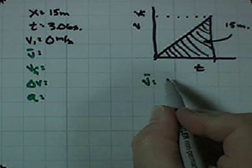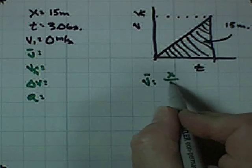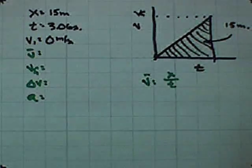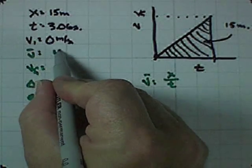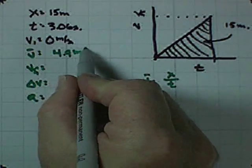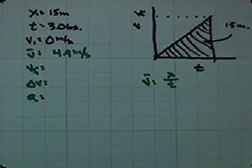Well, average velocity is easy. It's simply distance divided by time. 15 meters divided by 3.06 seconds gives us an average velocity of 4.9 meters per second.